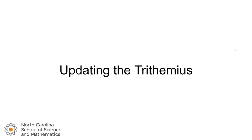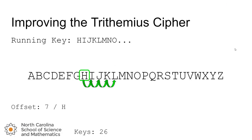Let's update the Trithemius cipher for our use. The very first thing we could do is just pick a different letter to start at. The idea of moving down the alphabet isn't a bad one, but if you always start at A, you're not really changing much. Here's a situation where we start at the letter H and move one letter to the right — we'll call that our offset. You could describe that either numerically or just specify you're starting at the letter H, and that acts as your key. The fact that you could start at 26 different letters means there are 26 possibilities, so the security at this point is about on par with a Caesar cipher — our Caesar cipher had 26 possible keys, and this has 26 possible keys.